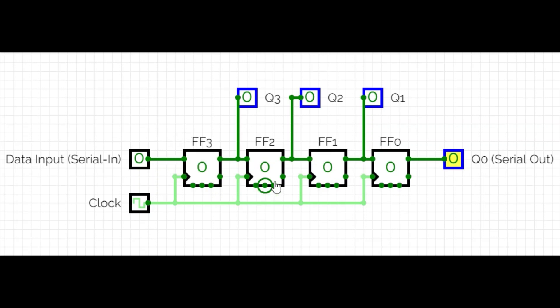This is the positive clock. Initially the output is zero. As you already know, in the case of a D flip-flop — it's a delay flip-flop — whatever input you provide, it will transfer to the output. At clock zero, we didn't apply any clock, so Q3 is zero, Q2 is zero, Q1 is zero, and Q0 is also zero.